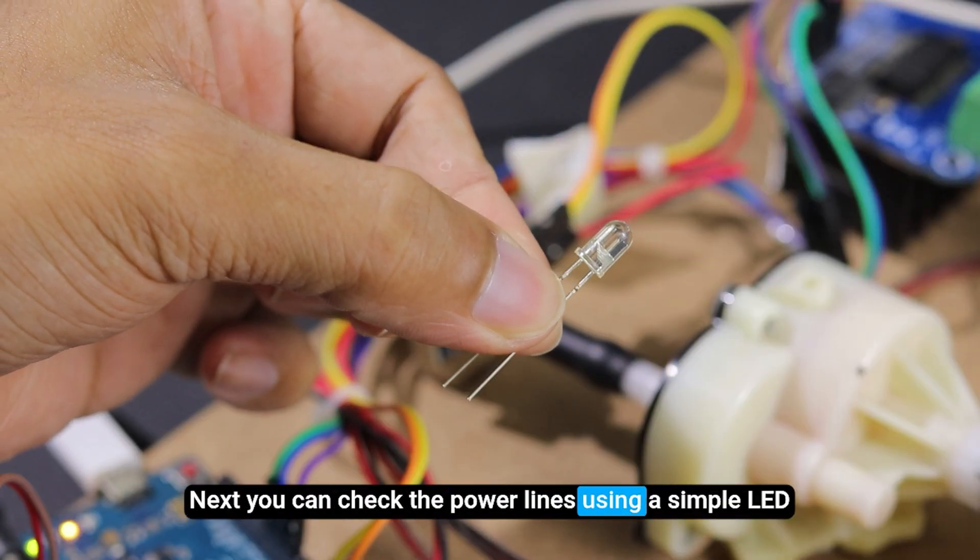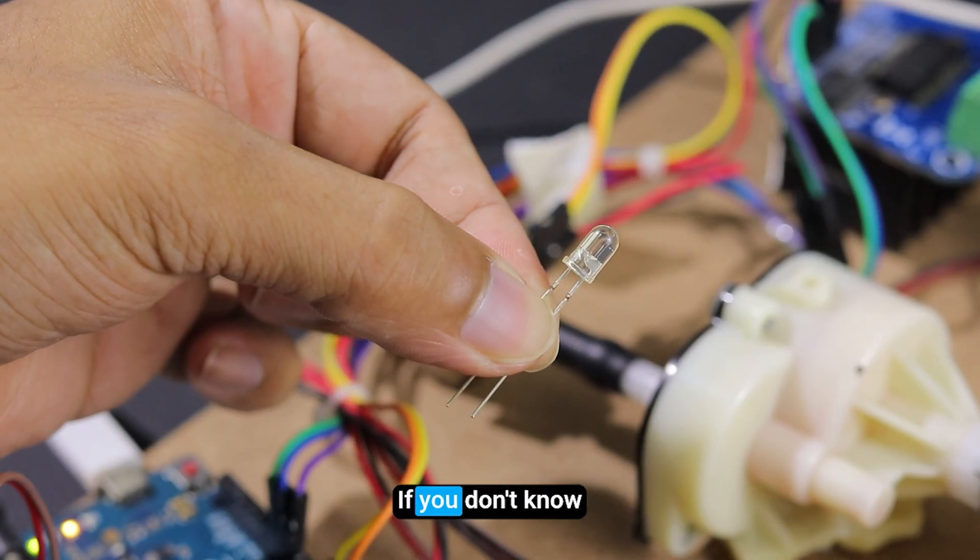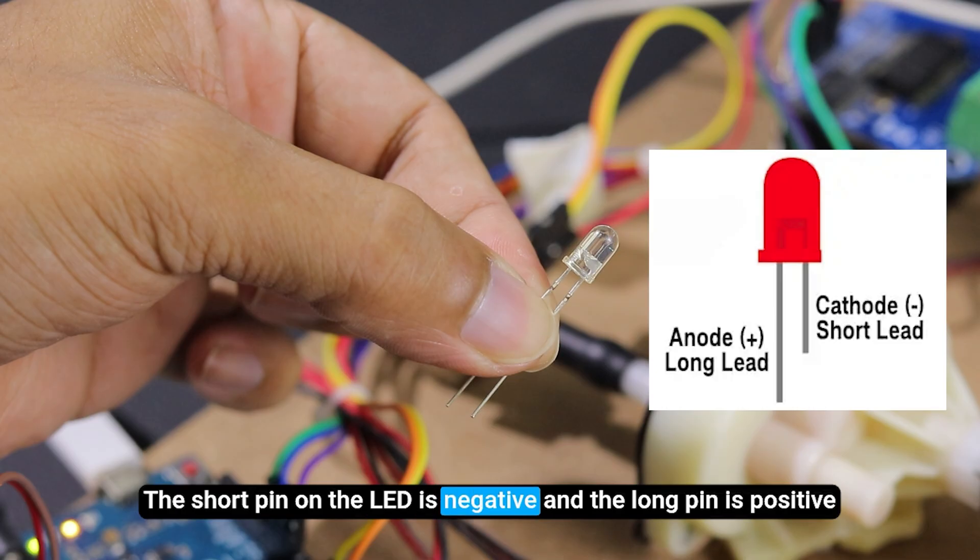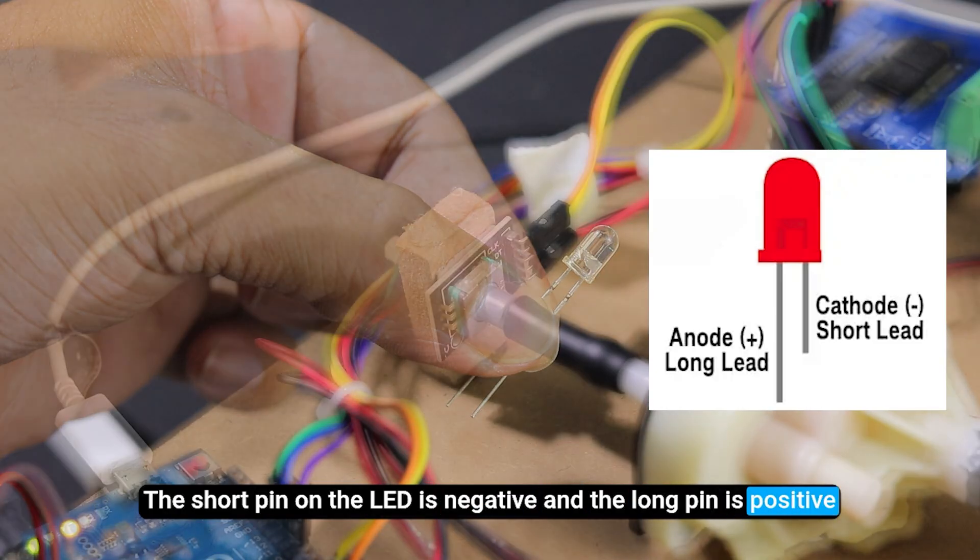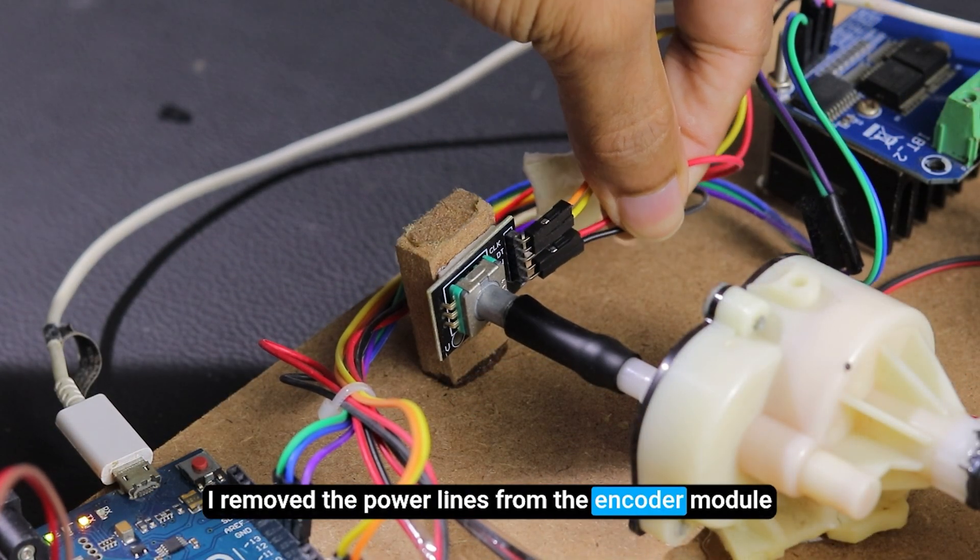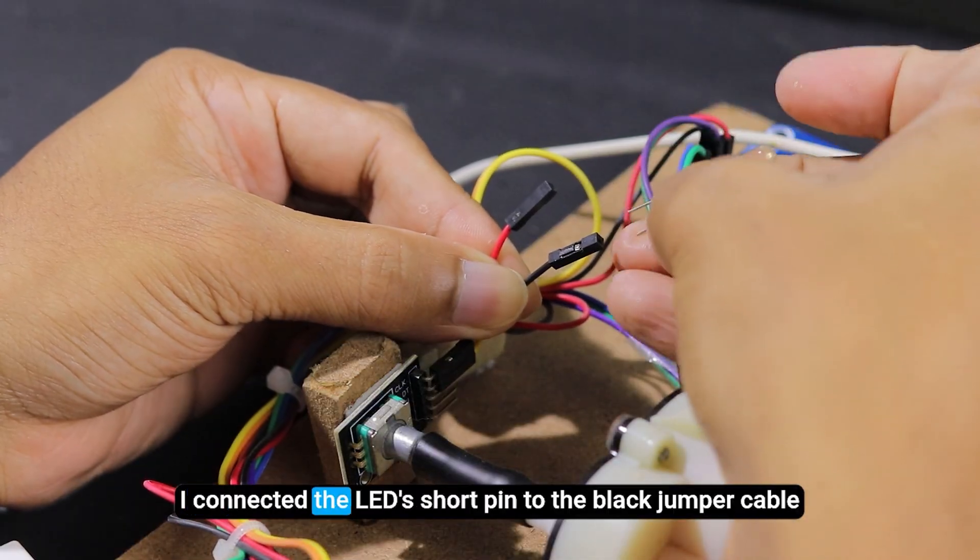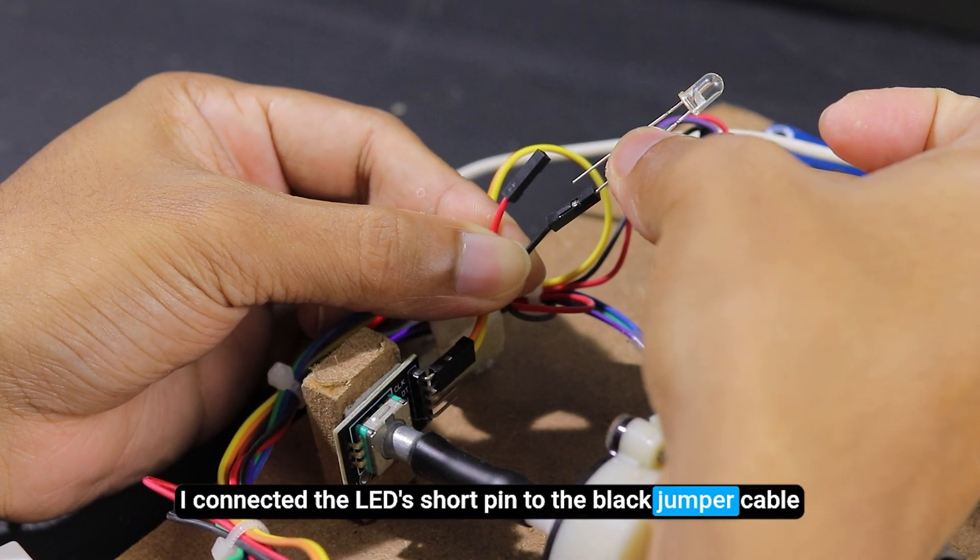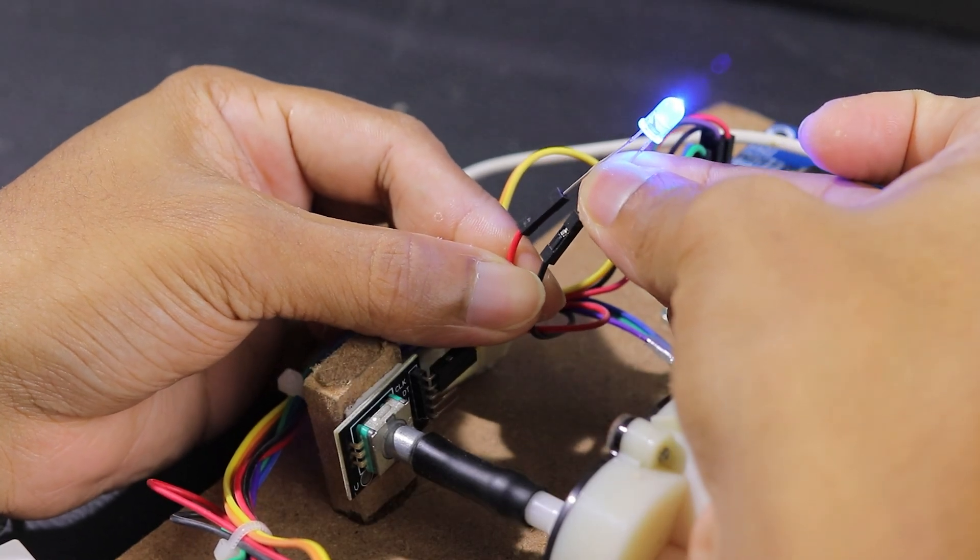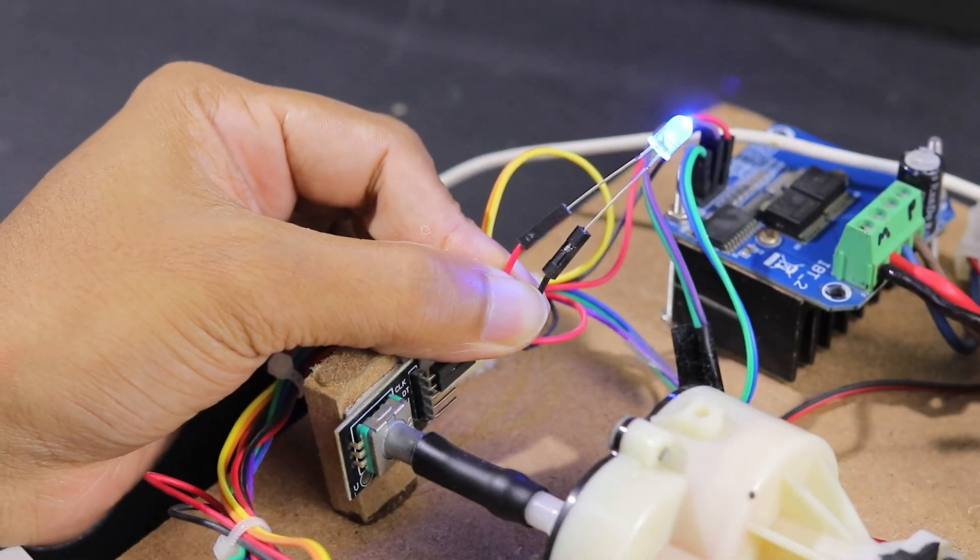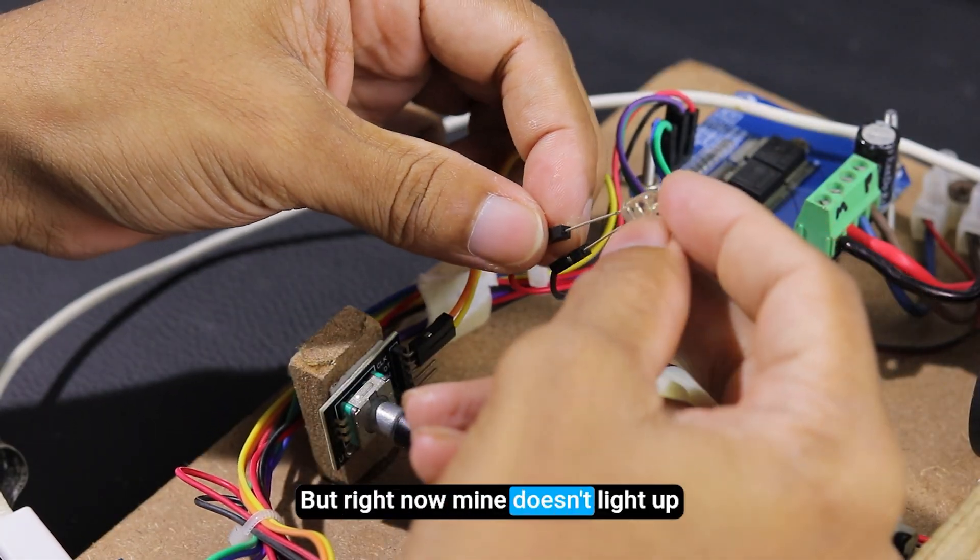Next, you can check the power lines using a simple LED. If you don't know, the short pin on the LED is negative and the long pin is positive. I removed the power lines from the encoder module. I connected the LED's short pin to the black jumper cable and the long pin to the red cable. It should light up like this, but right now mine doesn't light up.